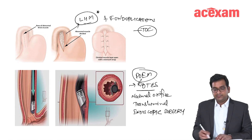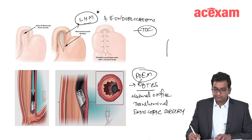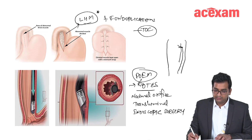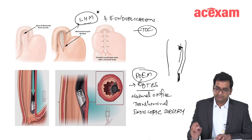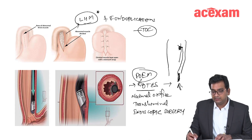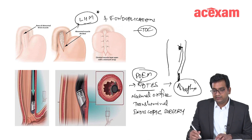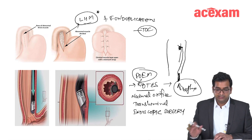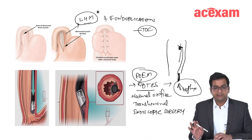In POEM, we divide the mucosa of the esophagus, dilate the tract, enter through the endoscope, go to the muscle and divide it, then close the mucosal injury with clips. The problem is there is increased reflux after POEM and no anti-reflux procedure is added, so the treatment of choice remains Heller's myotomy with fundoplication.